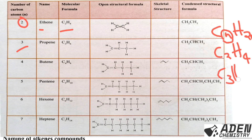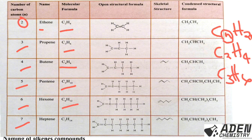For butene with four carbon atoms, it will be C4H8. For pentene with five carbon atoms, it will be C5H10. For hexene with six carbon atoms, it will be C6H12. For heptene with seven carbon atoms, it will be C7H14. Students, you can try on your own to find the formula for octene.